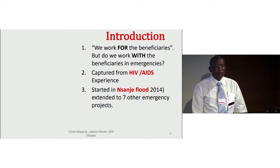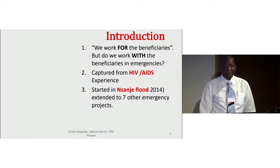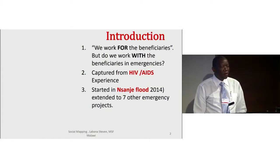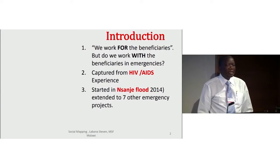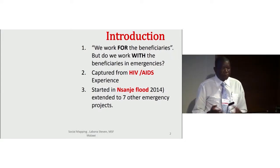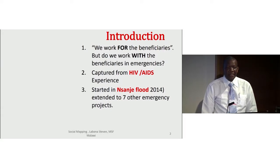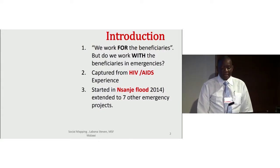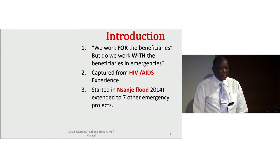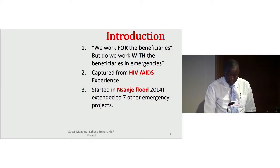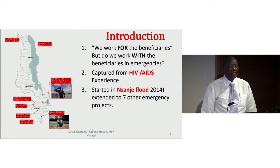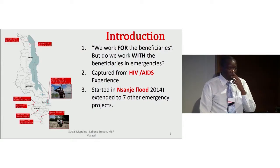In 2014, we found ourselves in the floods in Malawi, in Sanjay. It was a very difficult context. When you are already involved in an emergency, it is always difficult when you get quick information that you need to go and react. We felt the best way to understand the context and engage the beneficiaries was to use social mapping. When we used it in this area, it worked, and we extended the experience to seven other projects.